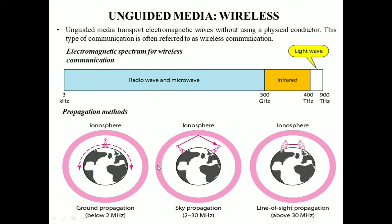Unguided media signals can travel from source to destination in several ways: ground propagation, sky propagation, and line of sight propagation.